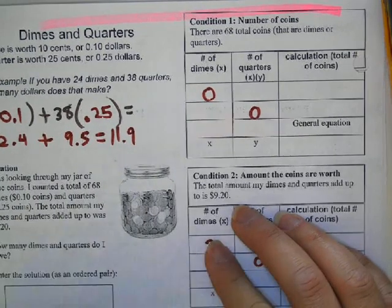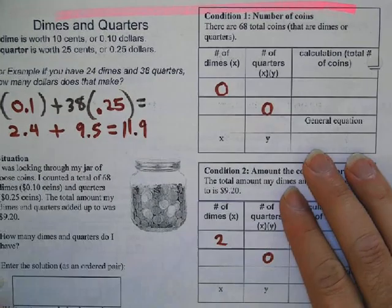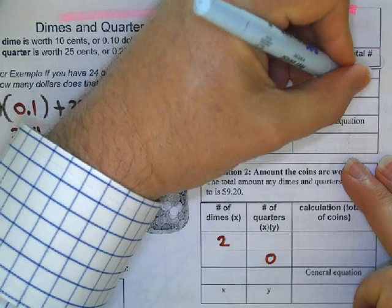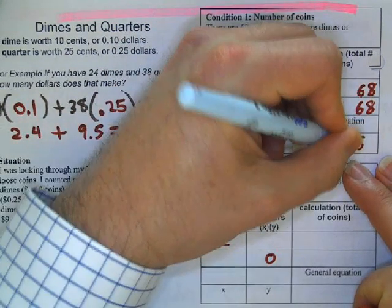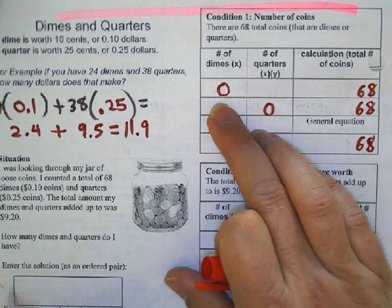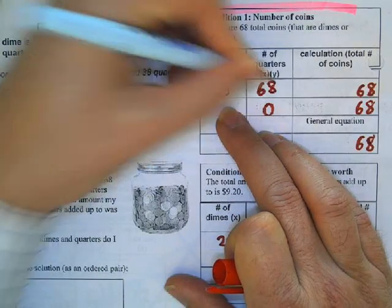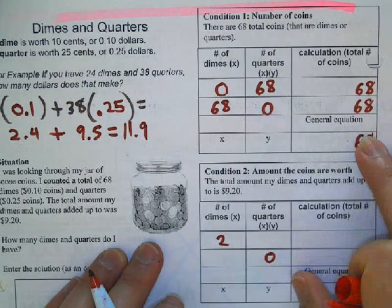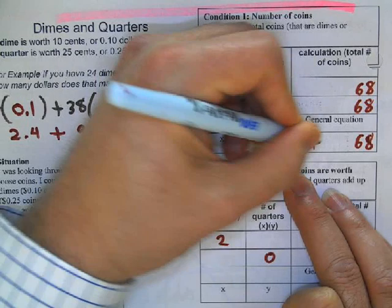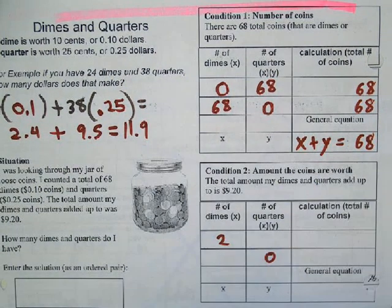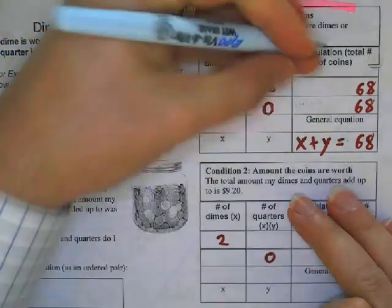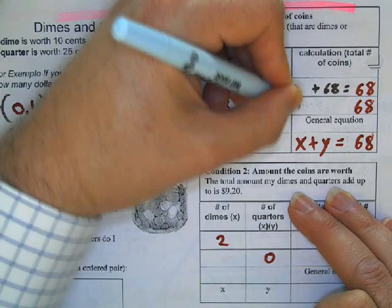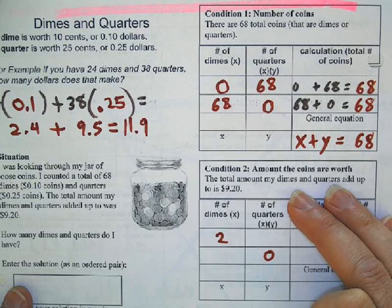Since you spent a lot of time in class going over this, I'm going to just talk about the general equation. There are 68 coins total, some of them are dimes, some of them are quarters. We're always going to have 68 coins. If I have zero dimes, then that means I've got 68 quarters. If I've got zero quarters, that means I have 68 dimes. So regardless, I'm either going to have 68 total coins, and they're either going to be dimes or quarters. So we figured out this equation here has to be x + y = 68.